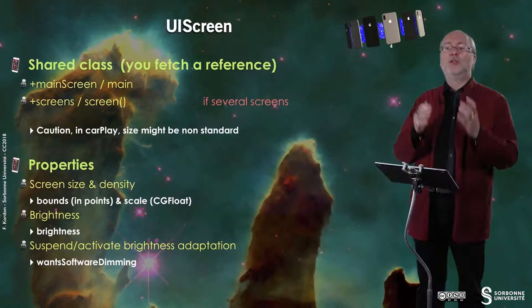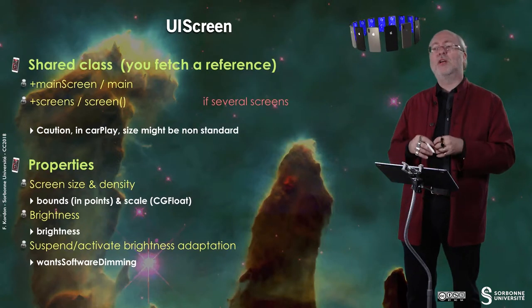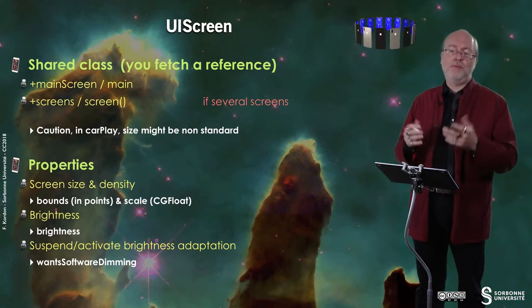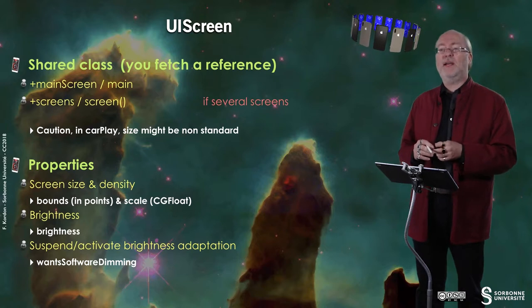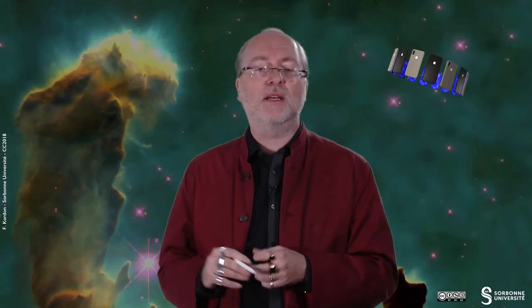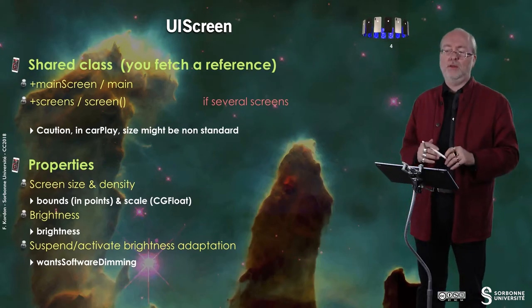Typically the scale is 1.0 — though not anymore on current devices — 2.0 for double resolution, and 3.0 for triple resolution. You can also get information on the brightness of the device and activate or deactivate the brightness adaptation according to the ambient lighting of the room.